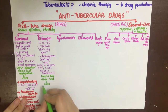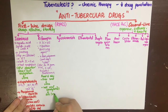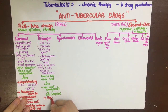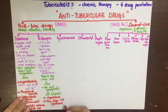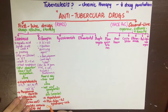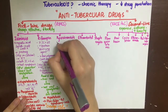Rifampin can be used in the treatment of TB, leprosy, meningococcal carrier state, and brucellosis. Adverse effects include hepatotoxicity — especially in elderly patients and alcoholics — flu-like syndrome, GI disturbances, skin rash, itching, and flushing. A characteristic red-orange color in urine, tears, and saliva is harmless but patients need to be educated about it. Rifampin is also an enzyme inducer that induces its own metabolism, and female TB patients may have unwanted pregnancies because of this.